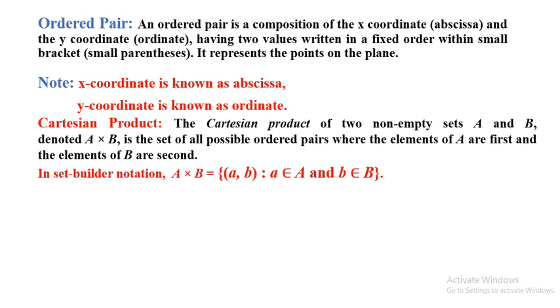For defining the Cartesian product, we have to take two non-empty sets. In this definition, we have to take two non-empty sets — at least two sets — and these two sets must be non-empty sets.